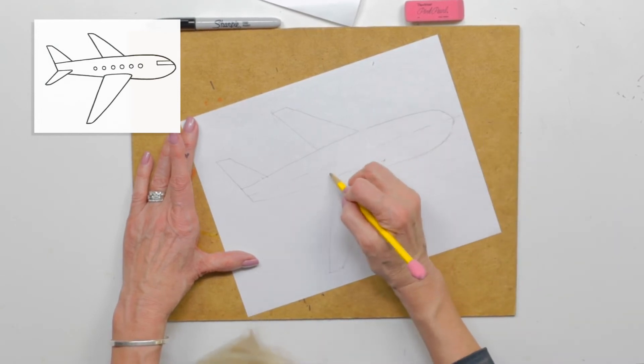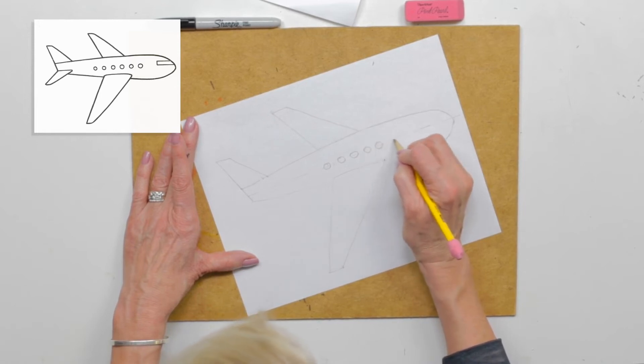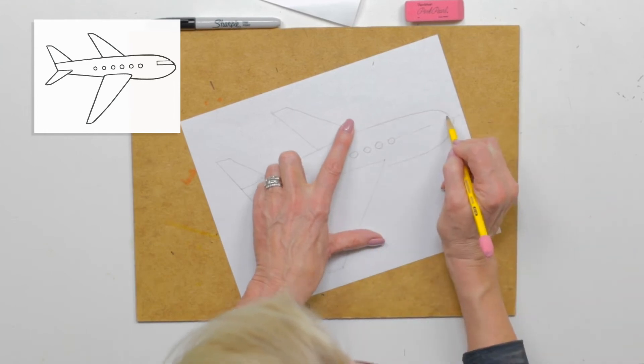So right along here, I'm going to put in my windows. It's really small. You can do circles or squares. Let's just do maybe six. You see how we put those right in the guideline. And then right at the front, we're going to put a little window for our pilot to see out of. Good.